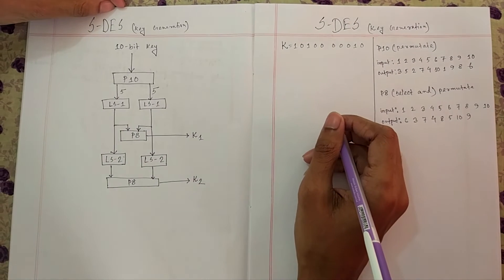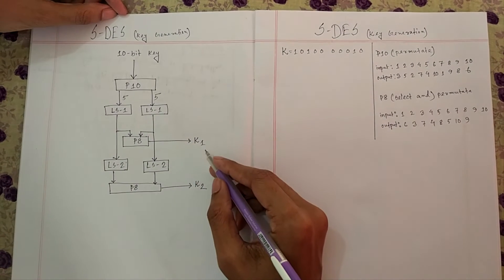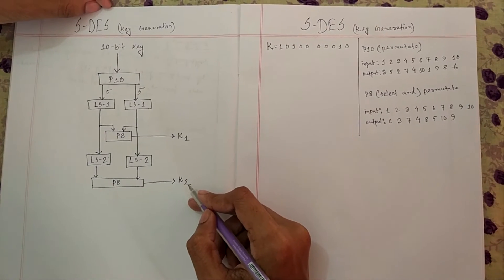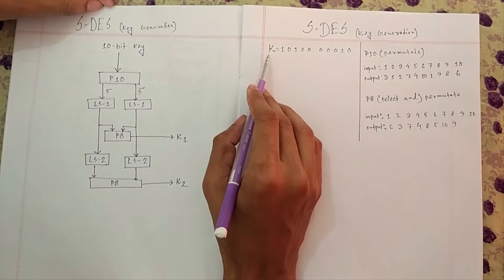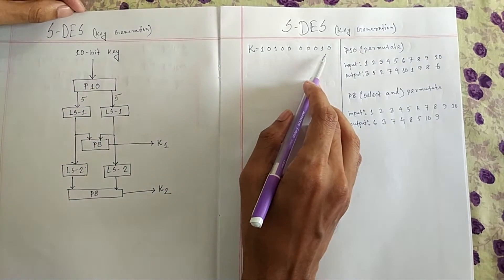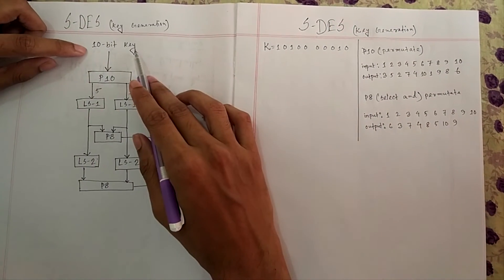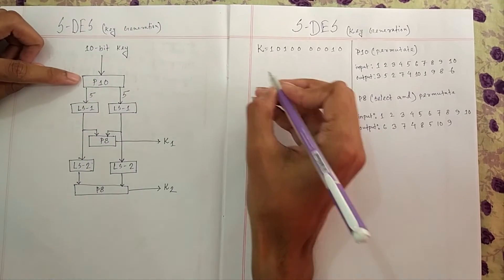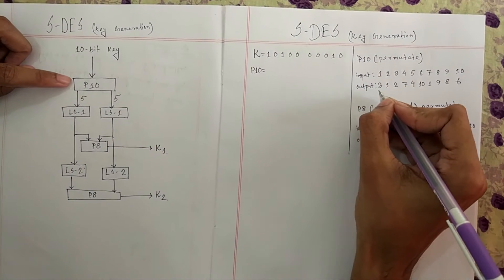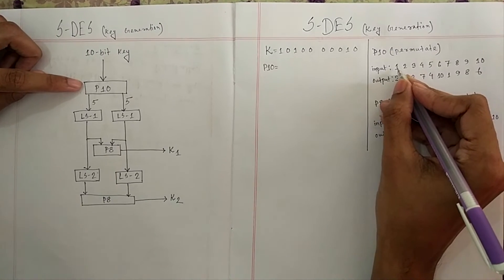This is S-DES key generation. We have to evaluate Key 1 and Key 2. The given value is K, a 10-bit key. To understand, I'll draw a figure here. The 10-bit key goes to P10. P10 is shown here — this is the output value and this is the input value.